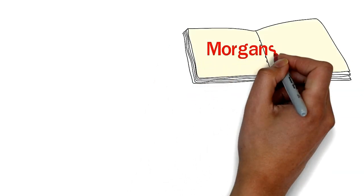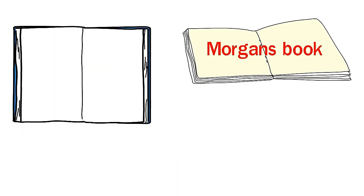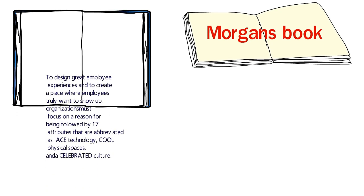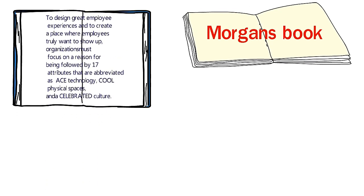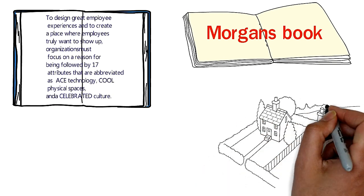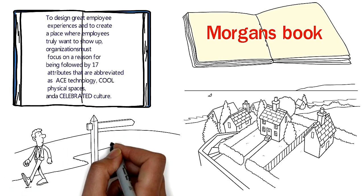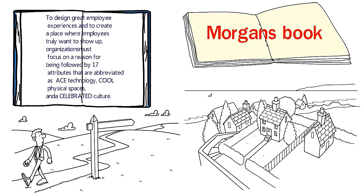Morgan's book as a whole deals with how to move away from utility to experience and uses the results of extensive research that was carried out by the author and his sponsors. The result of all this is that to design great employee experiences and to create a place where employees truly want to show up, organizations must focus on a reason for being followed by 17 attributes that are abbreviated as ACE technology, cool physical spaces, and celebrated culture.